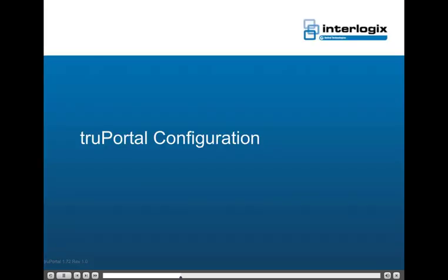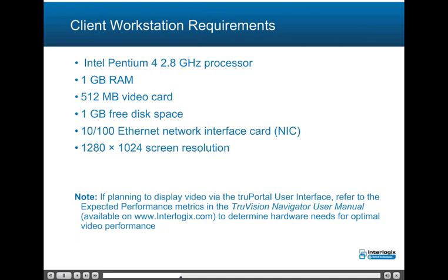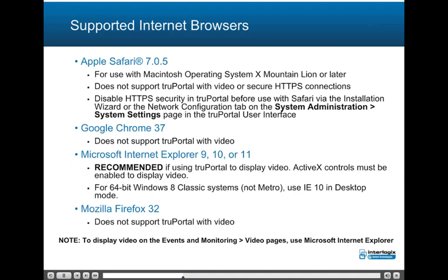This topic describes the TruePortal configurations. Client workstation requirements include an Intel Pentium 4 2.8 GHz processor, 1 GB RAM, a 512 MB video card, 1 GB free hard disk space, a 10/100 Ethernet network interface card, and 1280x1024 screen resolution. If displaying video via the TruePortal user interface, refer to the TRUVision Navigator User Manual for hardware needs for optimal video performance. Supported internet browsers include Apple Safari version 7.0.5, Google Chrome version 37, Microsoft Internet Explorer versions 9, 10, or 11 (required for displaying video on the Events and Monitoring Video page), and Mozilla Firefox version 32.